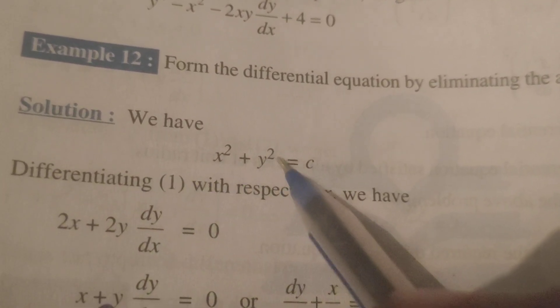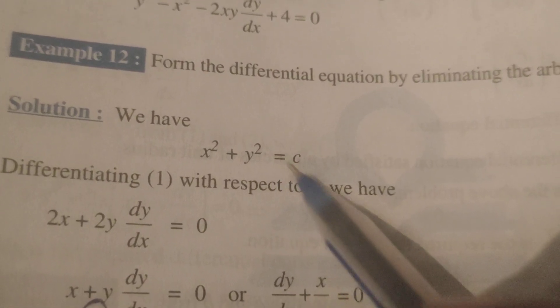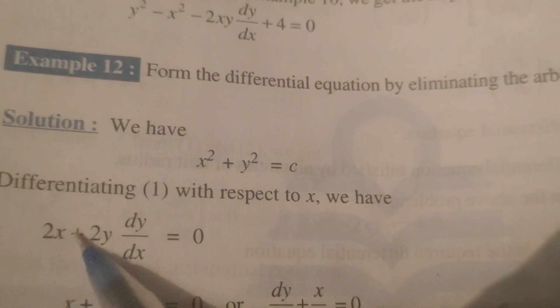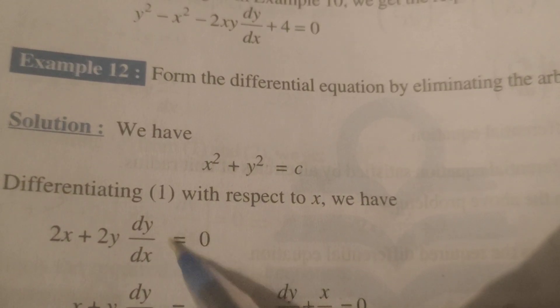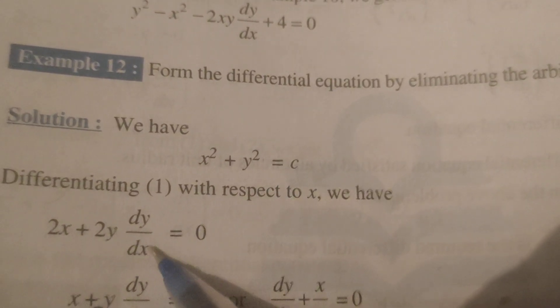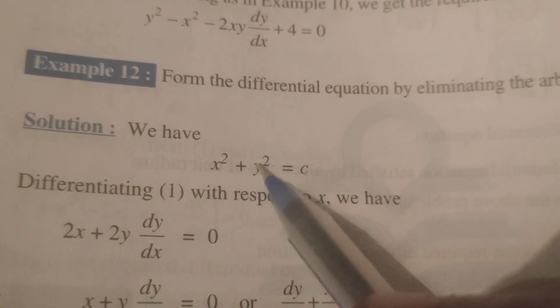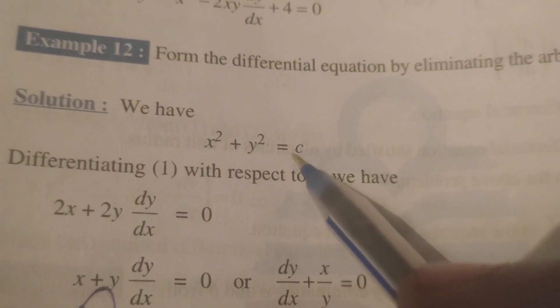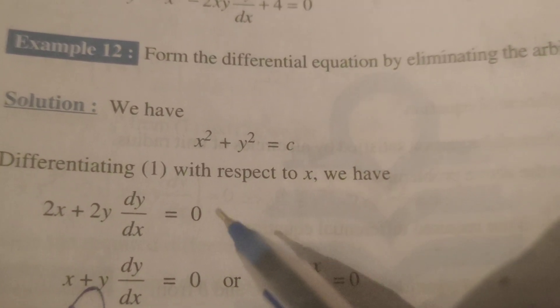First differentiating this with respect to x, that is 2x plus 2y dy/dx. Why? Because here differentiating with respect to x equals to differentiation of constant, which means 0.